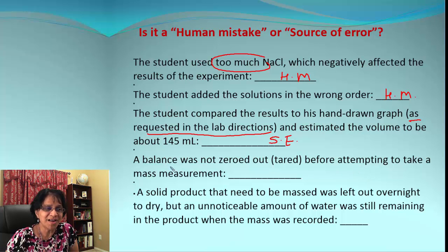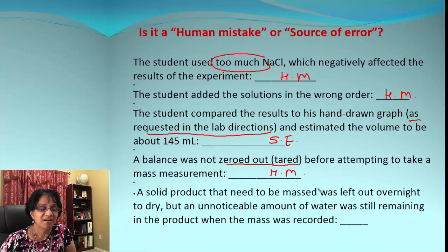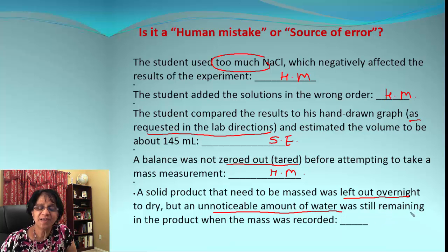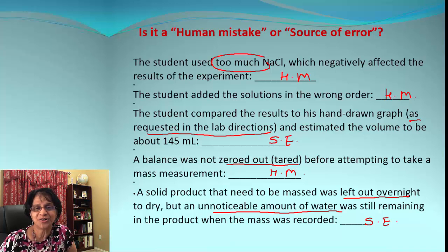Next: a balance was not zeroed out before use — that is carelessness, so it will be a human mistake. The next one: a solid product was left outside overnight to dry, but there was an unnoticeable amount of water still remaining when the mass was recorded. If the student was following the lab directions, then it was a source of error — and perhaps the directions should say to use an oven for drying before taking the mass.